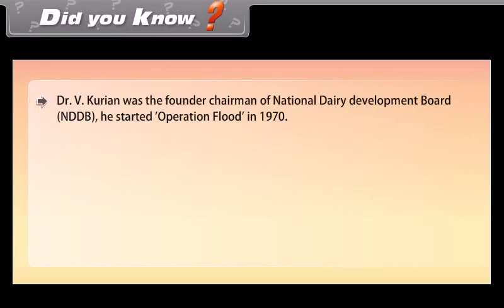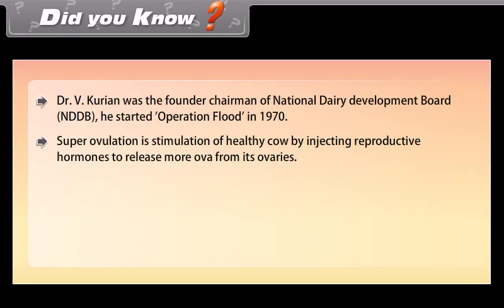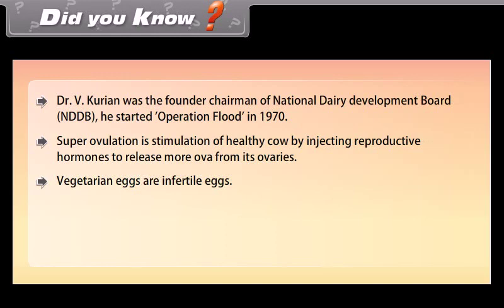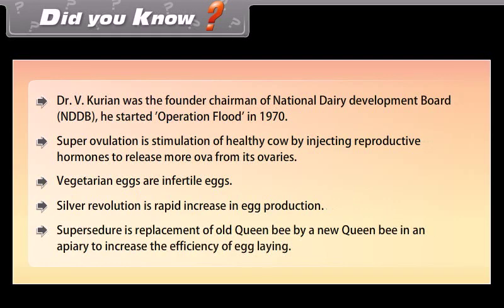Dr. V. Kurien was the founder chairman of the National Dairy Development Board (NDDB) and started Operation Flood in 1970. Superovulation is the stimulation of a healthy cow by injecting reproductive hormones to release more ova from its ovaries. Vegetarian eggs are infertile eggs. Silver Revolution refers to the rapid increase in egg production. Super seizure is the replacement of an old queen bee by a new queen bee in an apiary to increase the efficiency of egg laying.